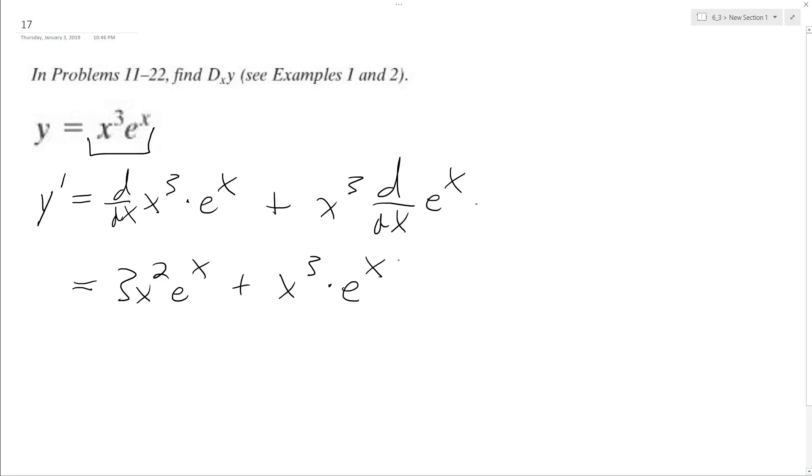So we can just leave it like this. If you want, I see an x squared and an e x is a common factor. So this will become,